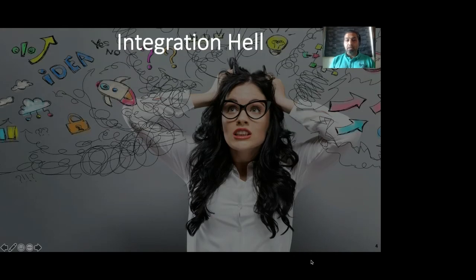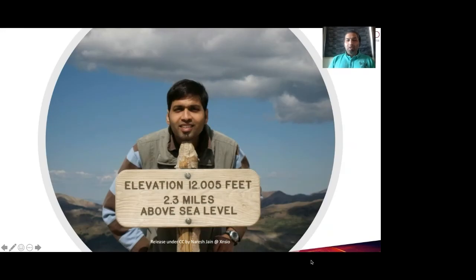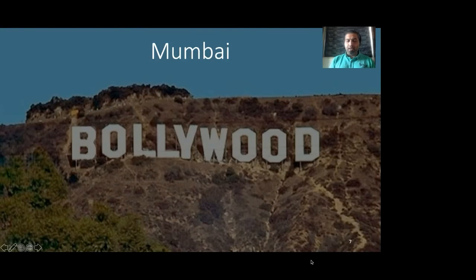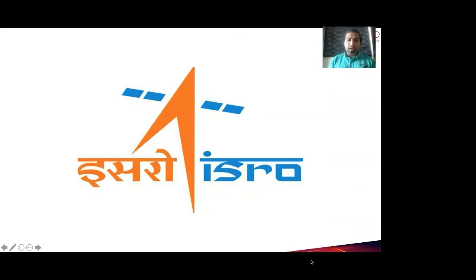There is a light at the end of the tunnel. But first — my name is Naresh Jain. I used to be an adventure sports freak, but as you can see from my current shape, I'm completely out of shape. I live in Mumbai. I run a consulting company called Accentio, which helps organizations across a gamut of different skills — we help engineer the business DNA to transform for a digital future. I started my career at a place called ISRO, where I was building neural networks for classifying remote satellite images.